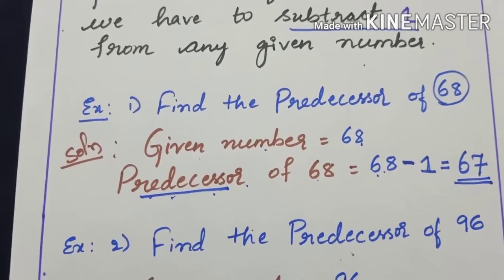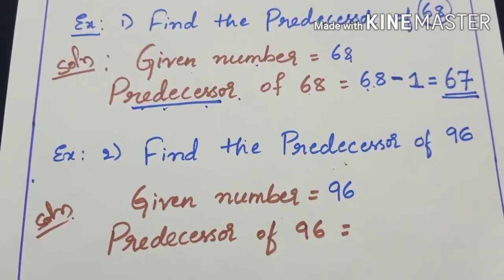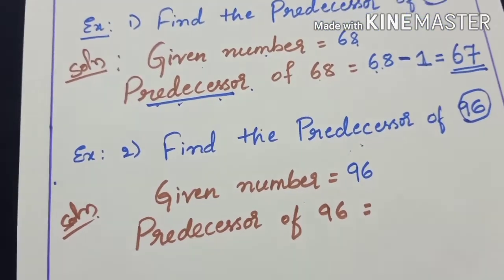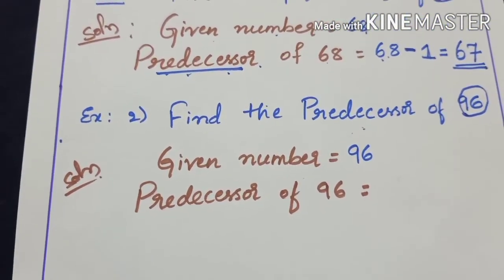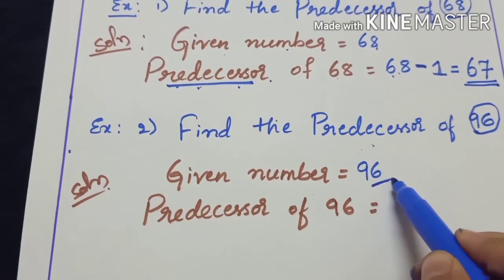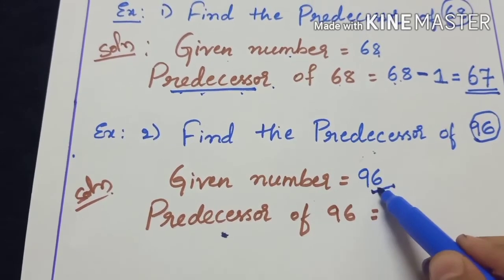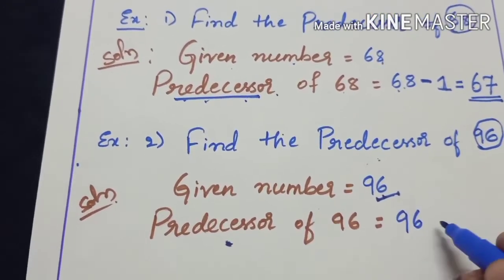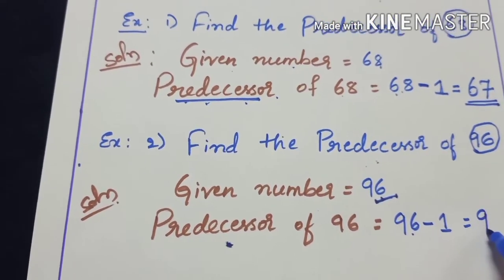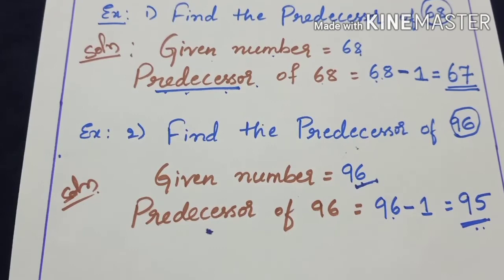Let me give you another example. Find the predecessor of 96. You can pause the video again and try to solve by yourself. The given number is 96. To find the predecessor, just subtract 1 from the given number: 96 minus 1.